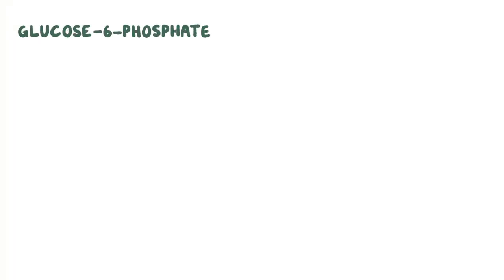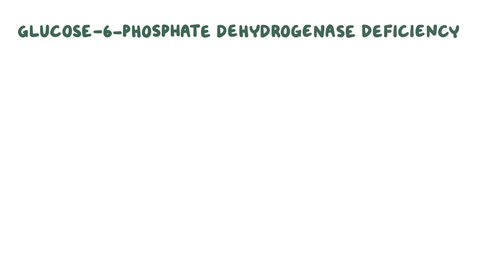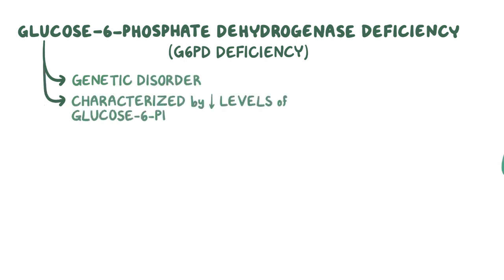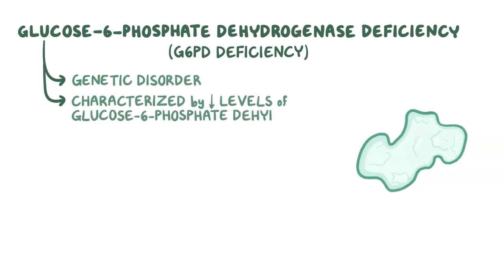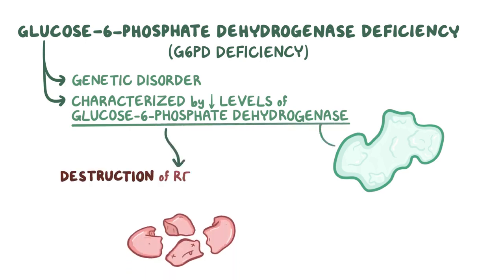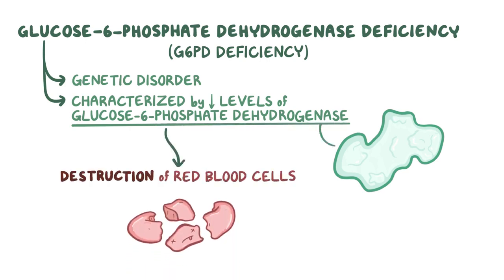Glucose 6-phosphate dehydrogenase deficiency, or G6PD deficiency, is a genetic disorder characterized by decreased levels of glucose 6-phosphate dehydrogenase, which leads to the destruction of red blood cells.